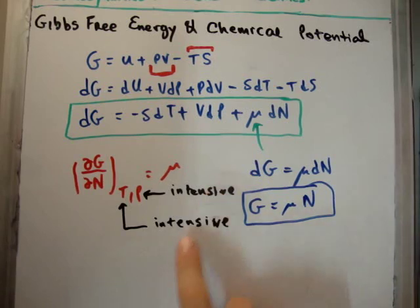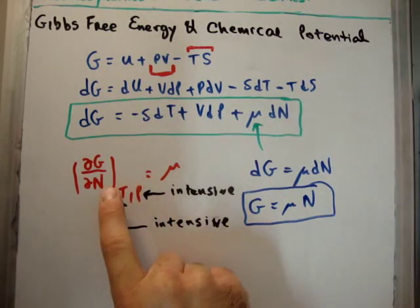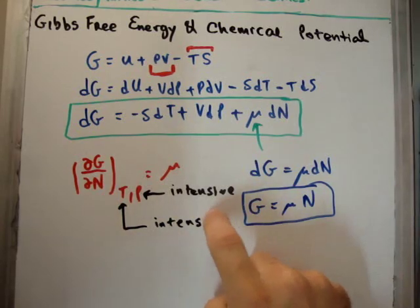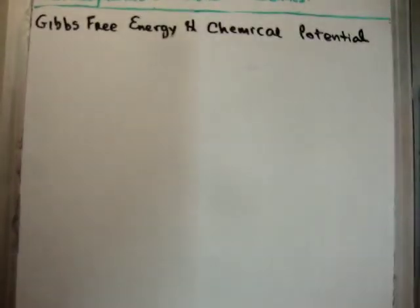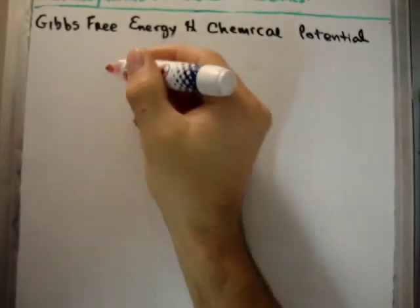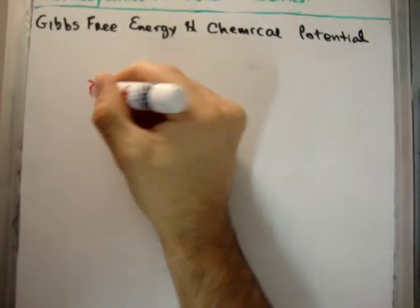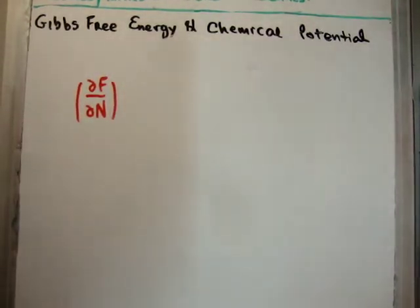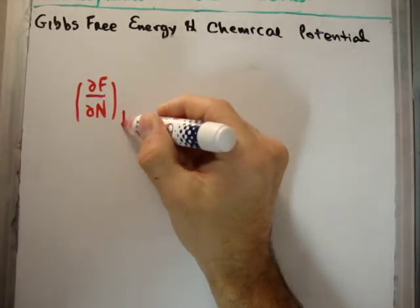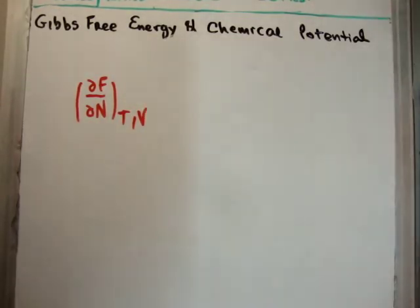So the point here is, because these fixed variables are both intensive, as you increase the number of particles, the chemical potential remains unchanged, and that's very important. Okay, so just one last thing on this, and it's to show a contrast. If we take a similar partial derivative, if we take del F del N, so this one is the Helmholtz free energy, we take the partial derivative with respect to the number of particles, we take it holding temperature and volume fixed. Now, by the partial derivative, this also should give us the chemical potential.